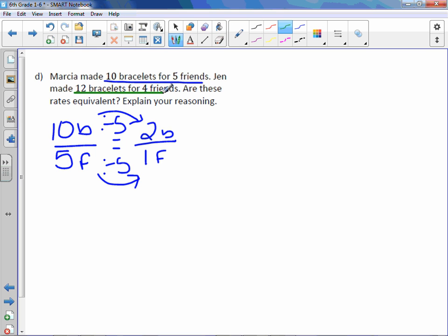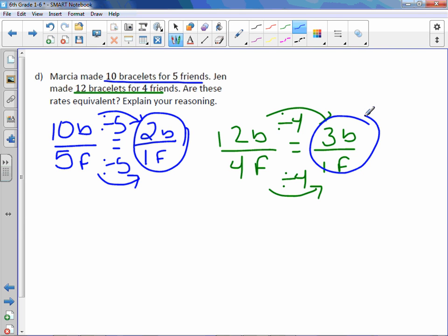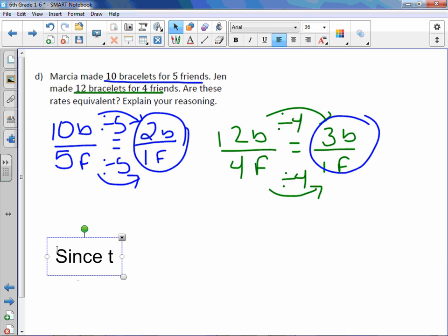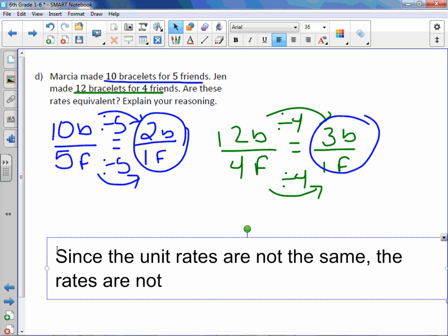And let's do Jen. Jen had 12 bracelets for 4 friends. To get a unit rate, we want 1 in the denominator. To get from 4 to 1, we divide by 4 and we do the same up top. 12 divided by 4 is 3. So we have 2 bracelets per friend and 3 bracelets per friend. Since the unit rates are not the same, the rates are not equivalent.